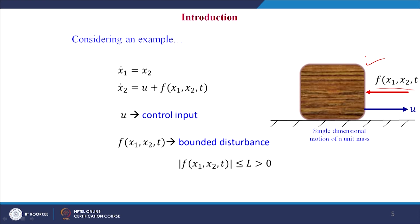The system states are x₁ and x₂, where x₁ is position and x₂ is the velocity of this mass. The state space model of the system is given by: ẋ₁ = x₂ and ẋ₂ = u + F(x₁, x₂, t), where the disturbance is bounded, i.e., |F| ≤ L, which is a positive quantity.